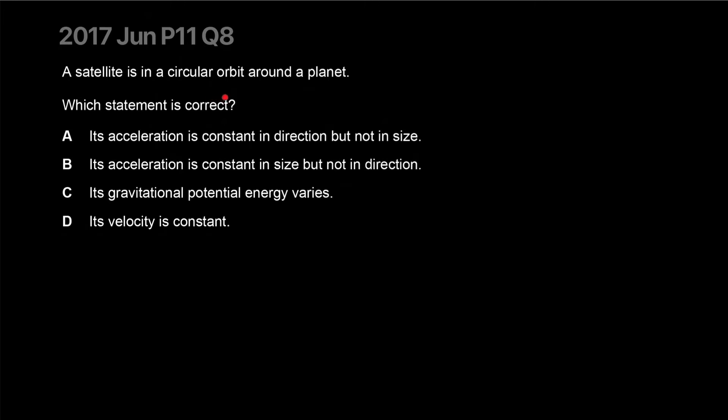A satellite is in circular orbit around a planet. Which statement is correct? Its acceleration is constant in direction, but not in size. The other way around. It's gonna be always the same acceleration towards the center of the planet, but the direction keeps changing because it's always at the center of the planet. Try saying that out loud. The direction is always changing because it's pointing at the same thing. Kind of mind boggling. Its acceleration is constant in size, but not in direction. That's true.